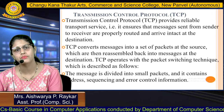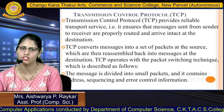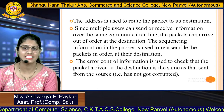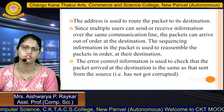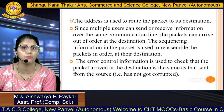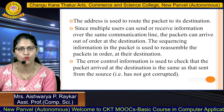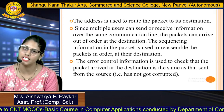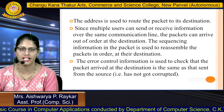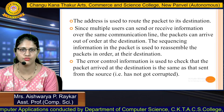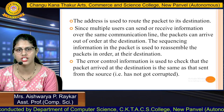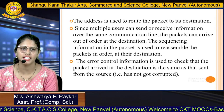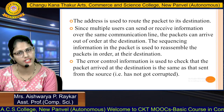In packet switching, a message is divided into small packets containing address, sequencing, and error control information. The address is used to route the packet to its destination. The sequencing information is used to reassemble packets in order at the destination, since multiple users can send and receive information out of order. The error control information is used to check that the packet arriving at the destination is the same as that sent from the source — if a packet got corrupted during transmission, error control information can detect that.